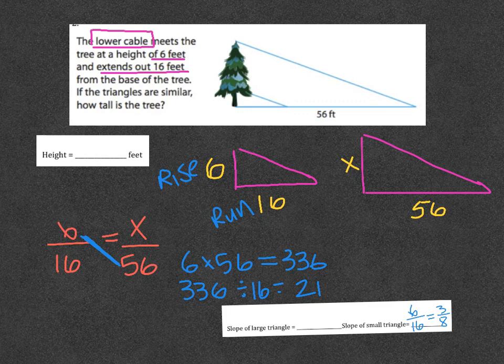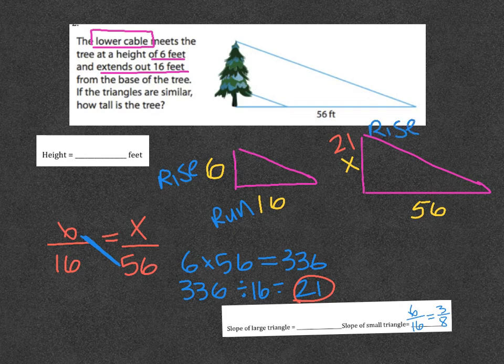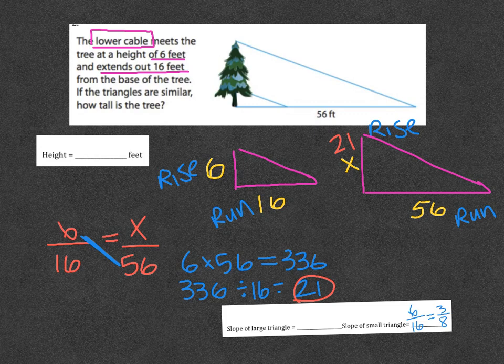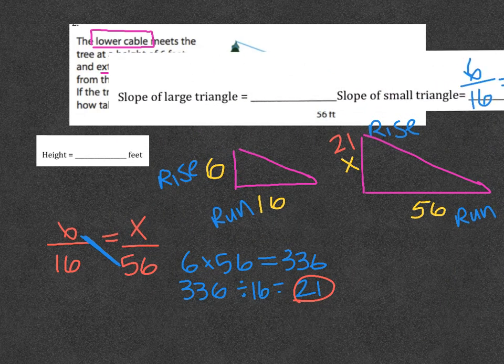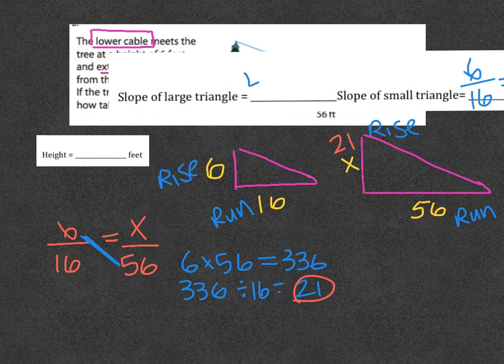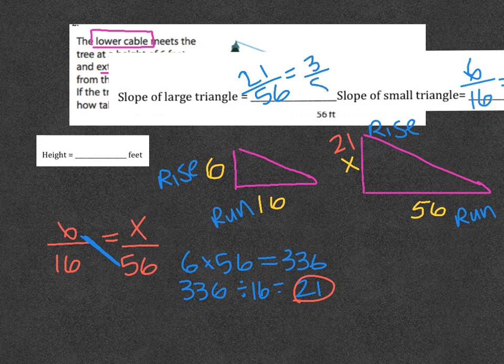So now that number is supposed to be the height of the entire tree. 21 should go up here, and once I know that, then this is going to be the rise, and this is going to be the run for the large triangle. I've got 21 over 56, and I'm going to make this big and put it up here just so I can write on it better, 21 over 56. I can also simplify that because both of these are divisible by 7, so my answer for this would be 3/8.